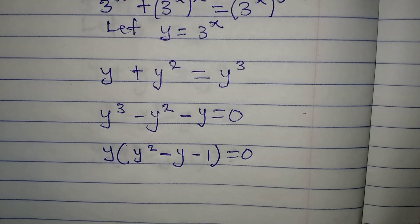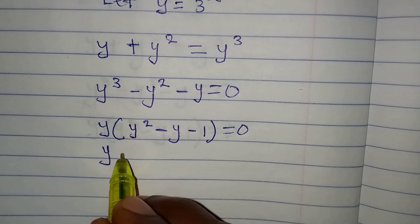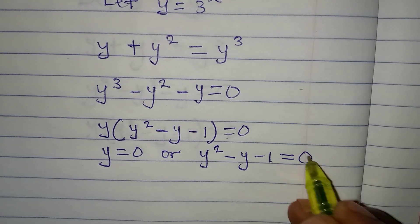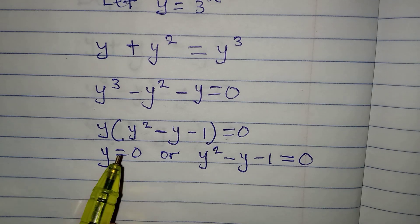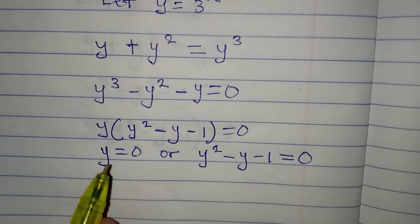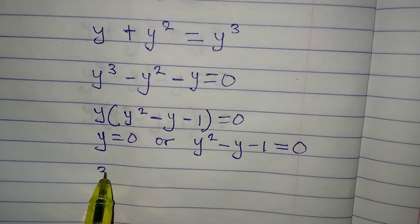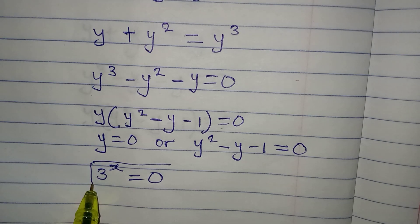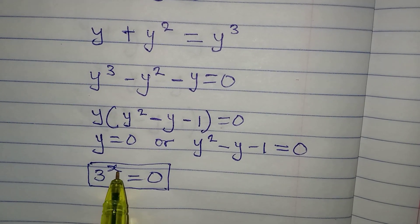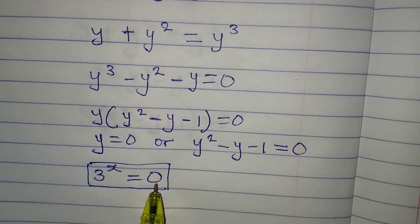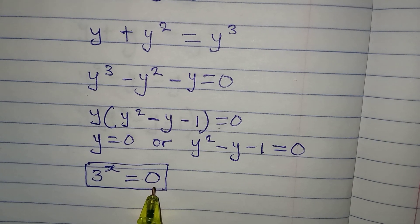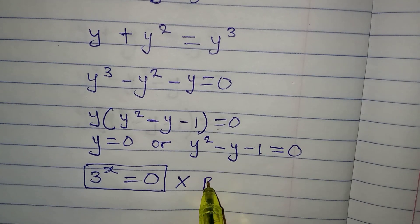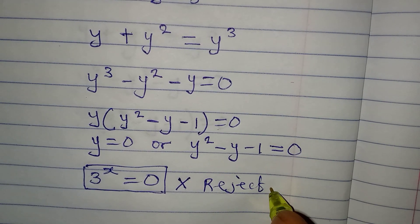At this point we apply the zero product rule, meaning either y equals 0, or y squared minus y minus 1 equals 0. But if y equals 0, then 3 to the power of x equals 0, and no value of x — whether 0 or negative — can make that true. So we must reject this answer.